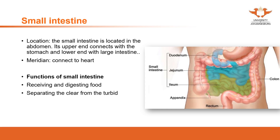Following digestion is the function of separating the clear from the turbid. The clear refers to the nutrition and qi we can use, while the turbid qi refers to the waste. The waste can be solid waste, or it can also be watery waste, which becomes urine.